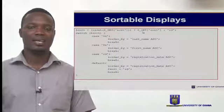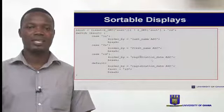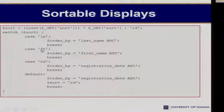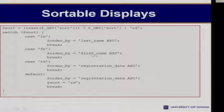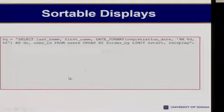In a case where we want to sort data, it would be wise to use variables that tell us what ORDER BY clause to append to the SQL we use to fetch the data. If we have 'ln', then we are saying we want to sort by last name. There's going to be a GET variable called 'sort' which would equal one of these parameters: 'ln', 'fn', or 'rn'. If it's 'ln', we sort by last name ascending. If it's 'fn', we sort by first name ascending. If it's 'rd', we sort by registration date. If none has been set, then we just order by registration date.